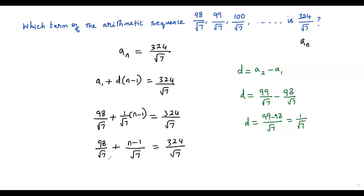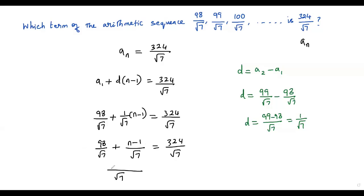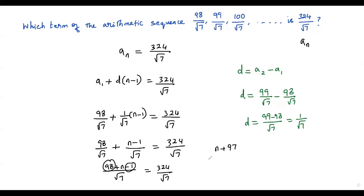Since both fractions on the left side share the denominator √7, we combine the numerators: (98 + n − 1)/√7 = 324/√7. Simplifying 98 − 1 gives 97, so we have (n + 97)/√7 = 324/√7.